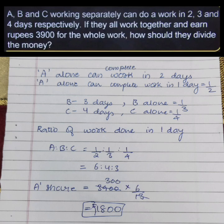Now, the total share for the work done together is 3,900. We would divide it by 6 upon 13. Since 6 plus 4 plus 3 is 13, the denominator would be 13. After multiplying it, the answer would come to be 1,800. This means that A's share would be 1,800 rupees.